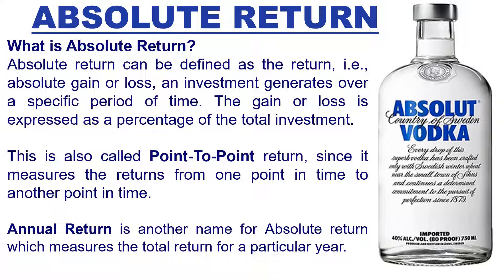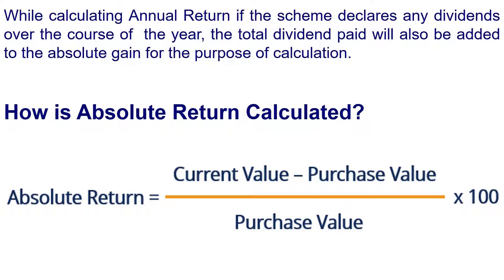Firstly, let us look at what is absolute return. Absolute return can be defined as the return, i.e. absolute gain or loss an investment generates over a specific period of time. The gain or loss is expressed as a percentage of the total investment and is irrespective of the time frame. This is also called point-to-point return or annual return since it measures the returns from one point in time to another point in time, like for a particular year. Also, if the scheme declares any dividends over the course of the year, that will also be added to the absolute gain for the purpose of calculation.